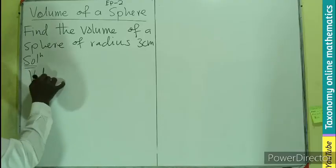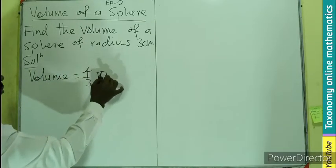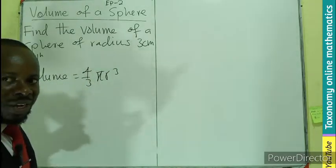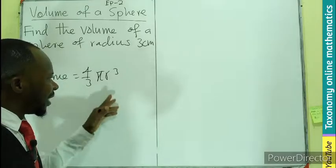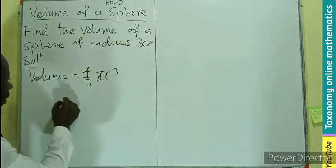We know the volume of a sphere is given by 4 over 3 pi r cubed, where pi in this case will be 22 over 7. The r is given to us as 3, so we are going to substitute these values.